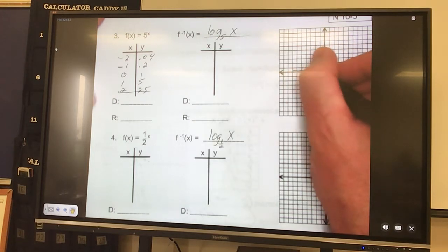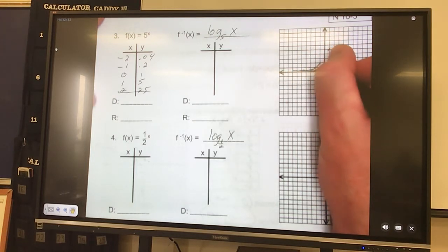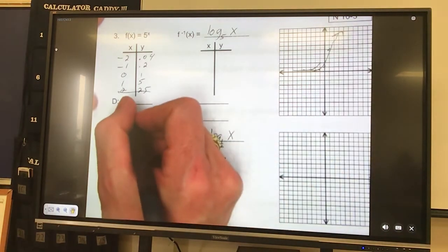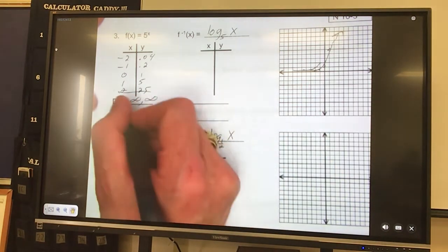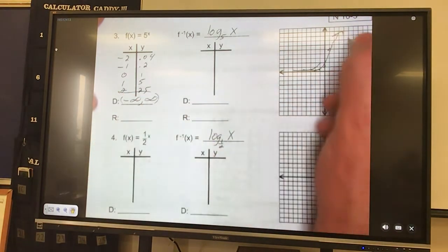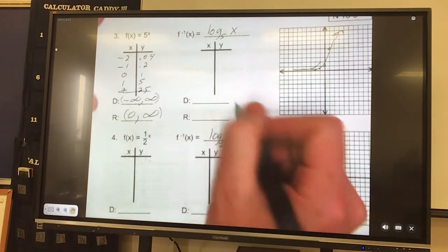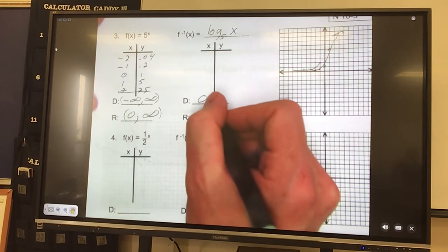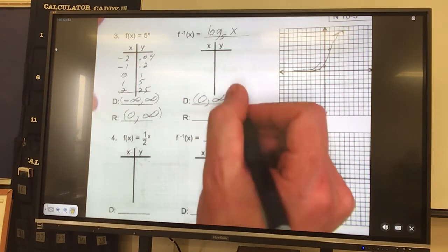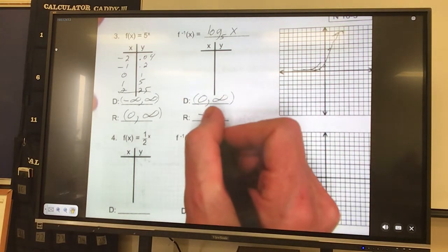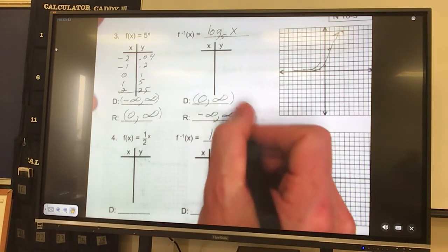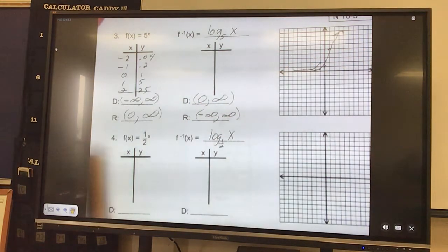And it just does this little dance right here, which is to the left forever, to the right forever is my domain. Range, it gets close to 0 but doesn't touch it, and it goes up forever. So we know to flip them. My domain for the next one should be 0 to infinity. Range should be negative infinity, positive infinity. So let's go ahead and take a look at it.